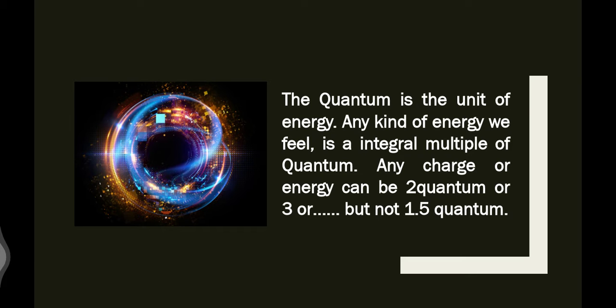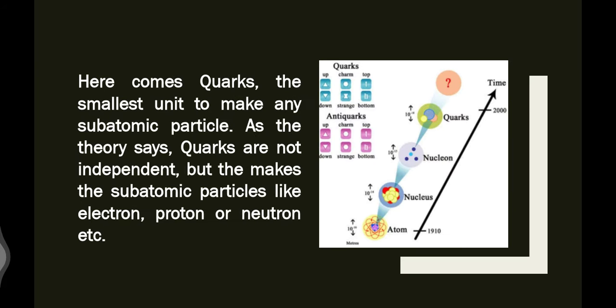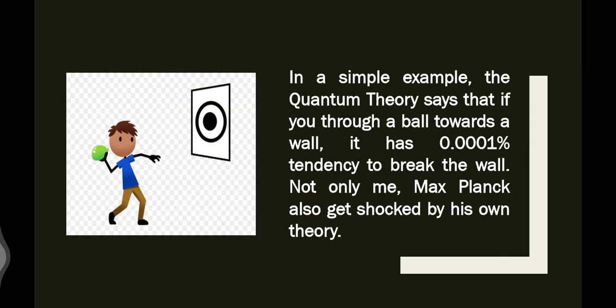Here comes the quarks. Quarks are a very vital thing in quantum theory, but I don't know something better than that. Quarks are the smallest unit to make any subatomic particles. As the theory says, quarks are not independent but mixed—they make subatomic particles like electron, proton, or neutron. So quarks make an electron, proton, or neutron. All the bodies are made of quarks. It's a concept, and quarks are not independent—they're always a team that makes something. So here you can see the picture.